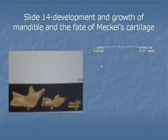Item 1: The development of the body of mandible — that is, the horizontal mandible — is preceded by Merkel's cartilage, belonging to the first branchial arch. It acts mildly as a scaffold around which the bone of mandible forms, but does not take part in bone formation.